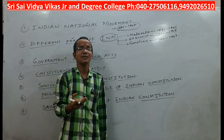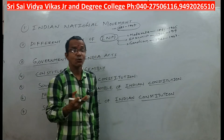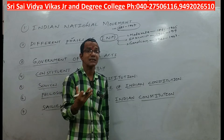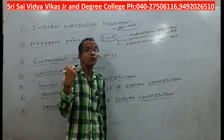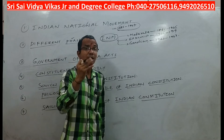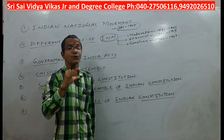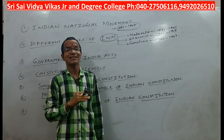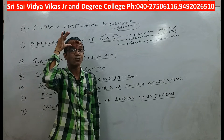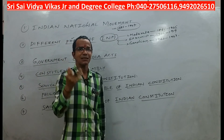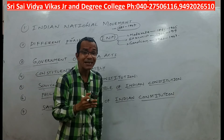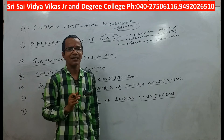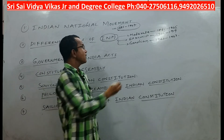Moderates include Dada Bhai Nauraji, Umesh Chandra Benarji, and Gopalakrishna Gokale. These people showed loyalty and faithfulness towards the British people. They wanted only reforms in the existing administration and followed the methods of petition, prayer, and mediation. They never opposed British policies.